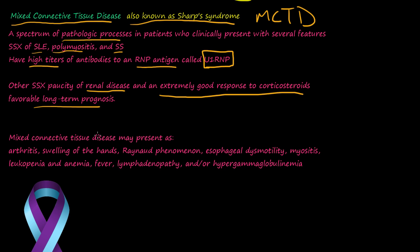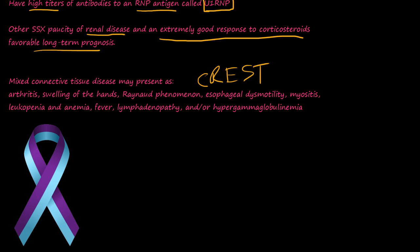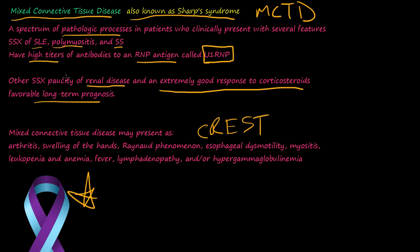Mixed connective tissue disease or MCTD may present with arthritis, swelling in the hands, Raynaud's phenomenon, esophageal dysmotility, myositis (inflammation of the muscles), leukopenia and anemia, fever, lymphadenopathy, and/or hypergammaglobulinemia. This ribbon is used to raise awareness of the condition. It can be a diagnosis by exclusion because patients can present with all these different features.